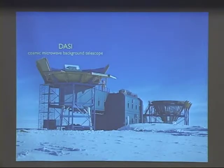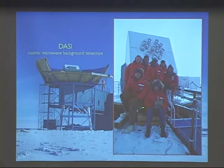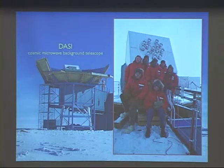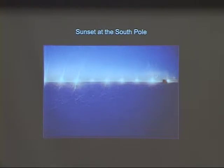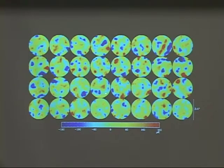Around the same time — actually just a bit later — we were down at the South Pole. We put this telescope up there. Every cosmic microwave telescope is odd-looking, and this is no exception. It's an interferometer combining the signals from all these little microwave telescopes. We waited for the sun to set — which is kind of fun at the South Pole, it takes days. Our winter-overs were there and made these images during that one polar night.